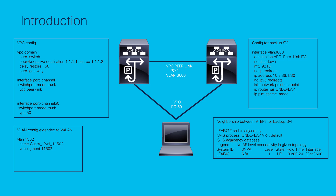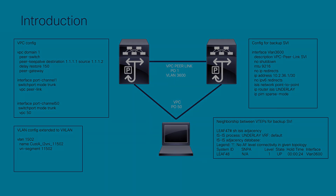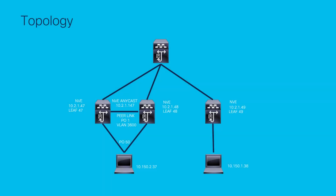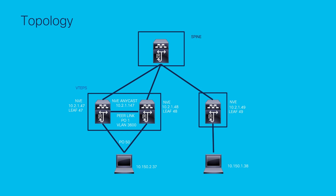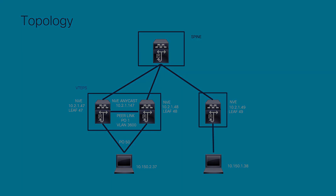In order to explain better what InfraVLANs is and when to use it, we're going to use the following topology. On the screen, you have a VXLAN setup with three leaves, also known as VTEPs. One pair is running VPC and the other leaf is in standalone mode. The three Nexus leaves are connected via a spine, which forwards the traffic between the VTEPs.